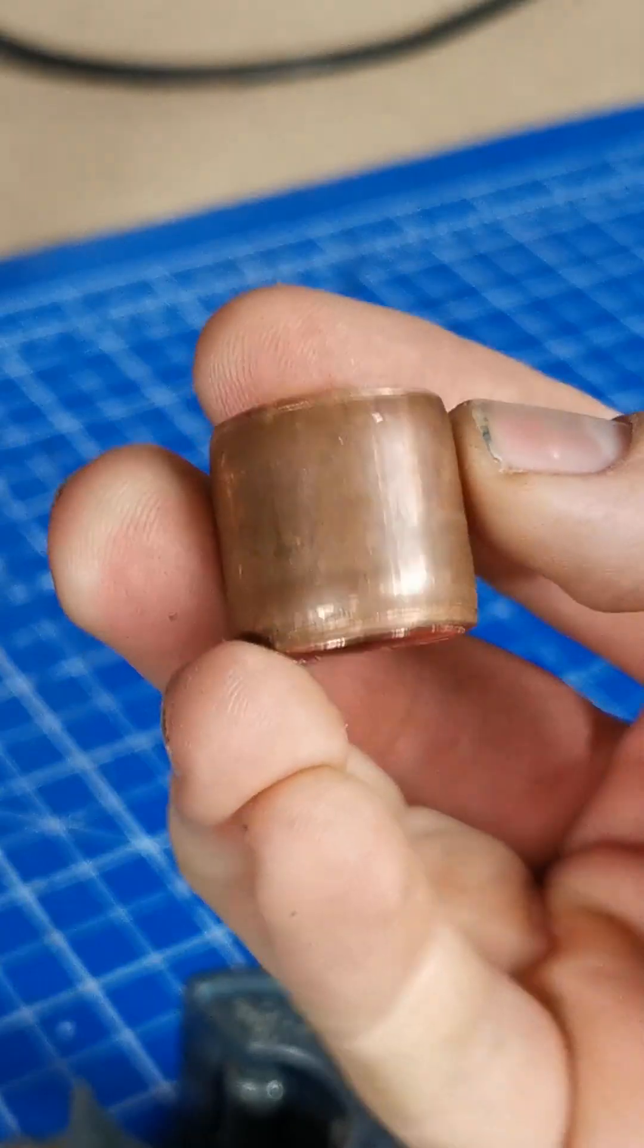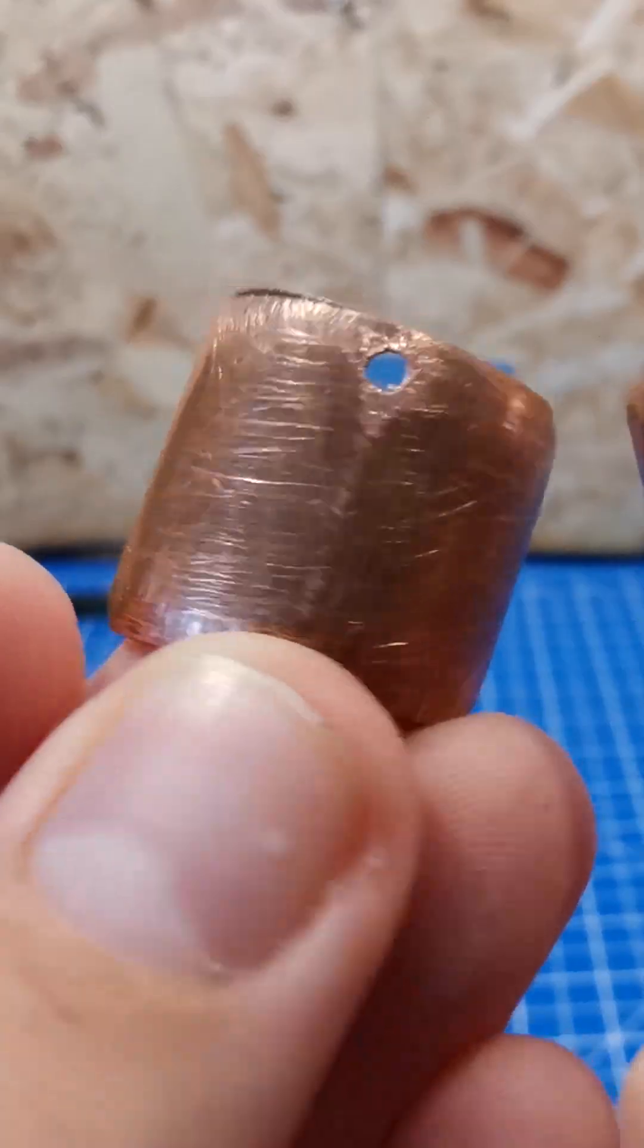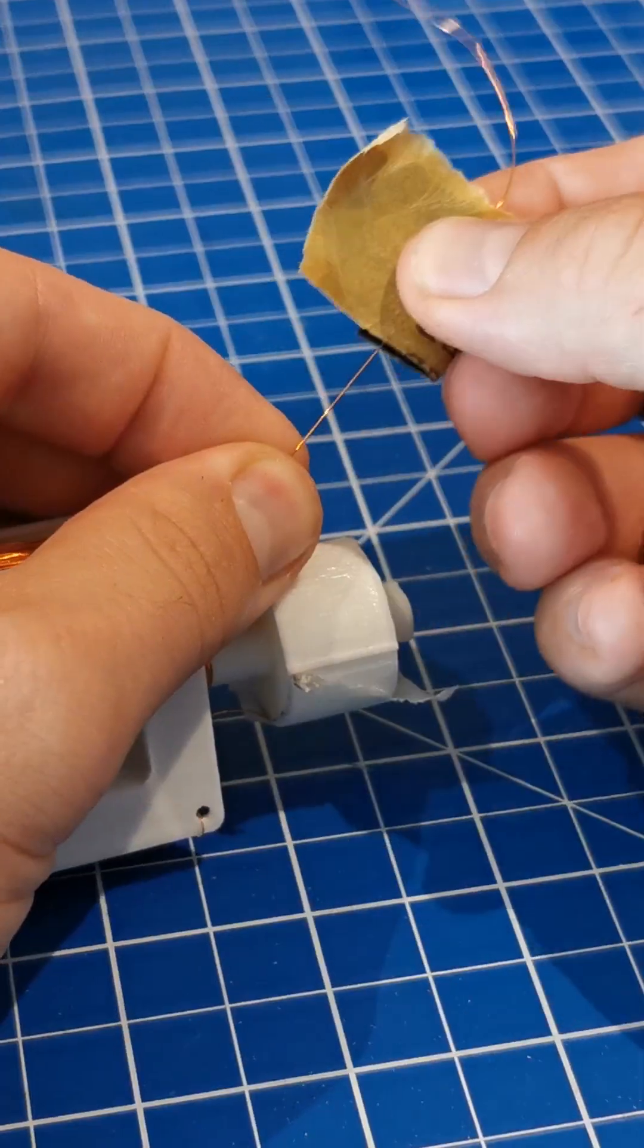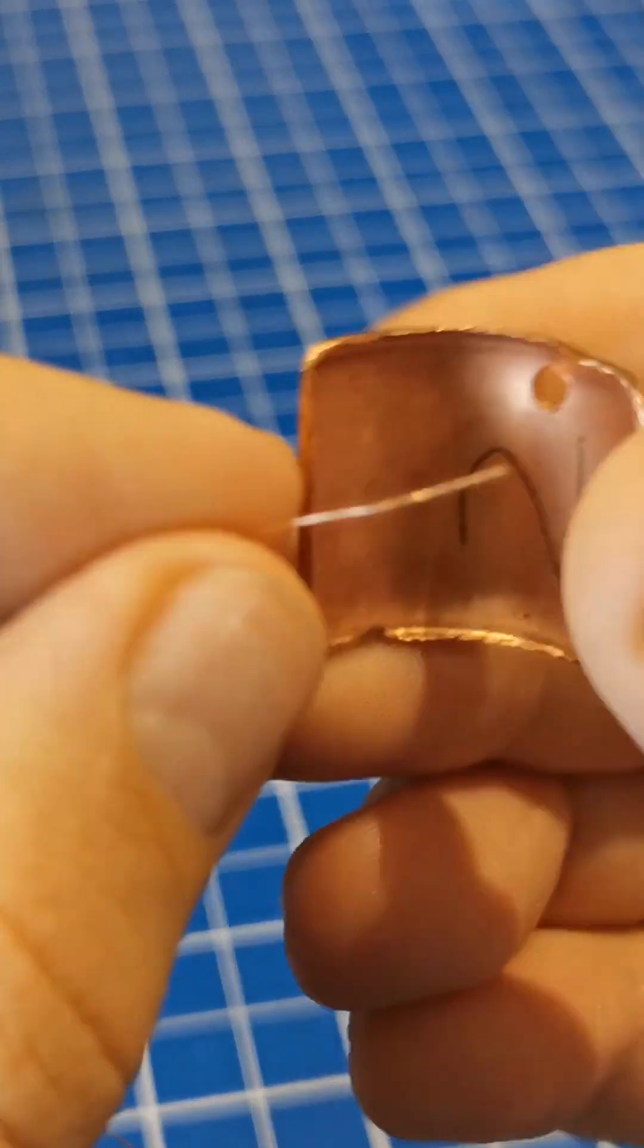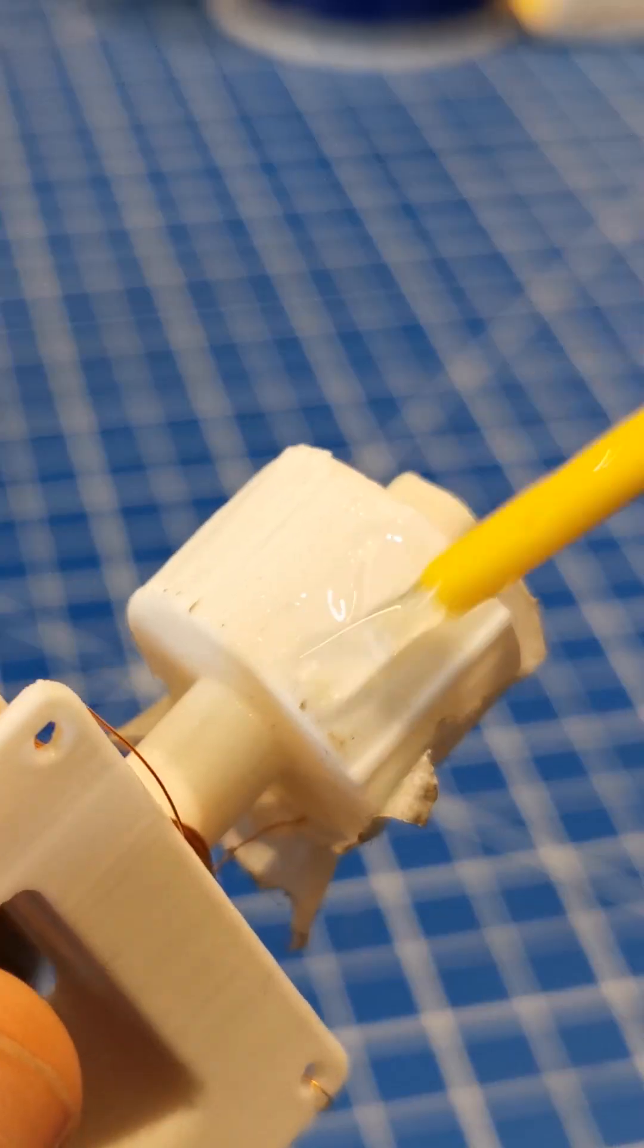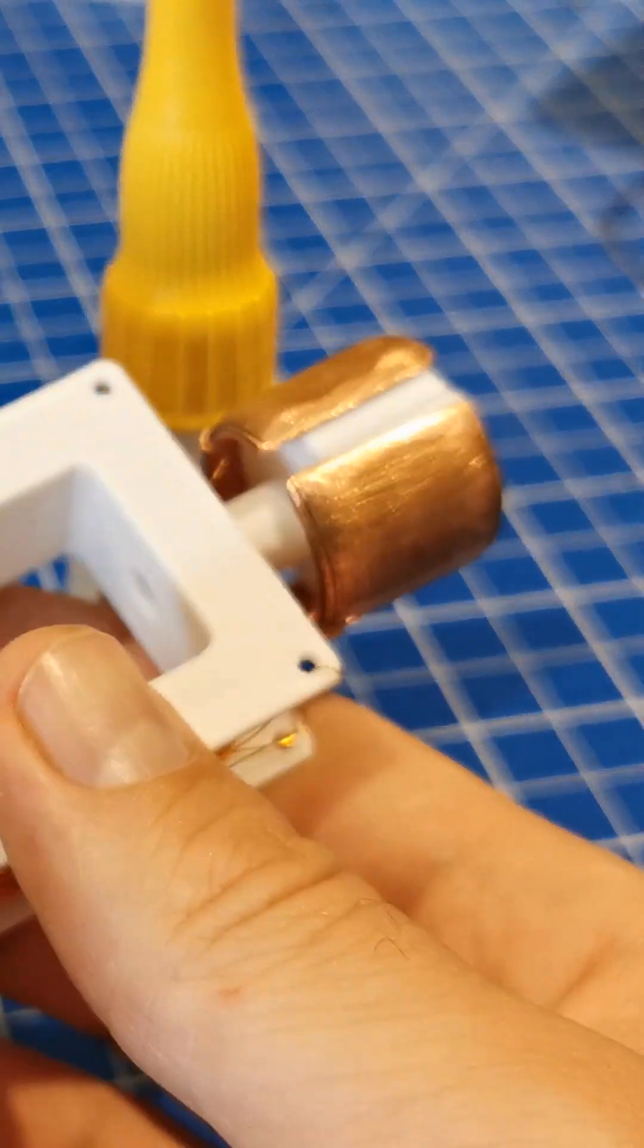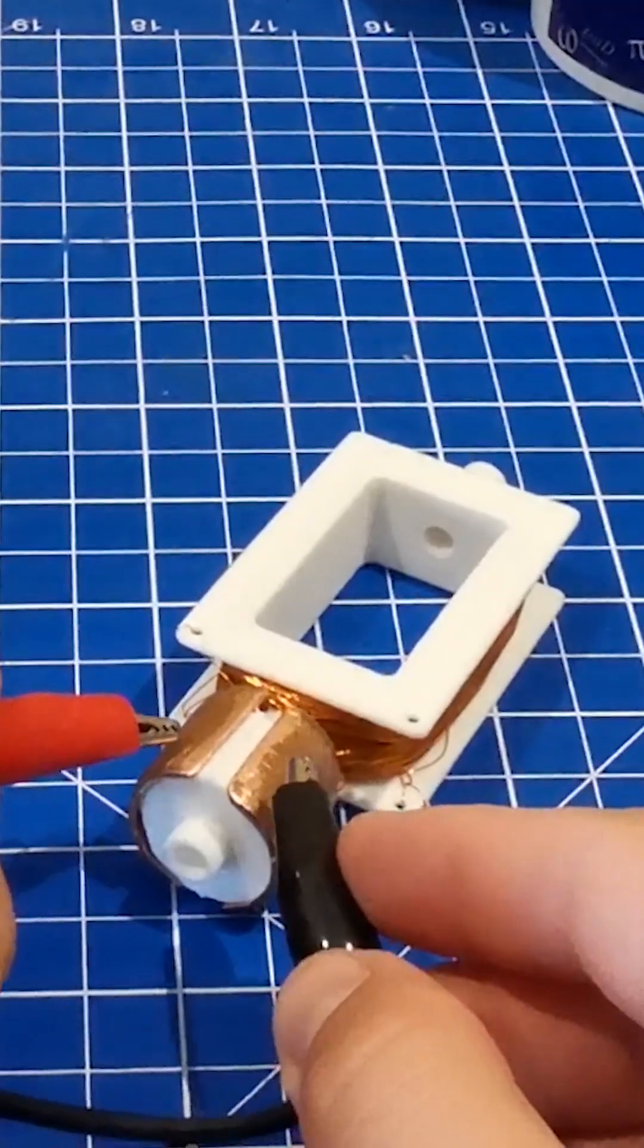Cut some copper pipe, drill a hole through it and then cut it in half. Use some sanding paper to clean the enamel off of the ends. Secure the wire to the copper plates. Glue the plates to the rotor on both sides and test for continuity with a multimeter.